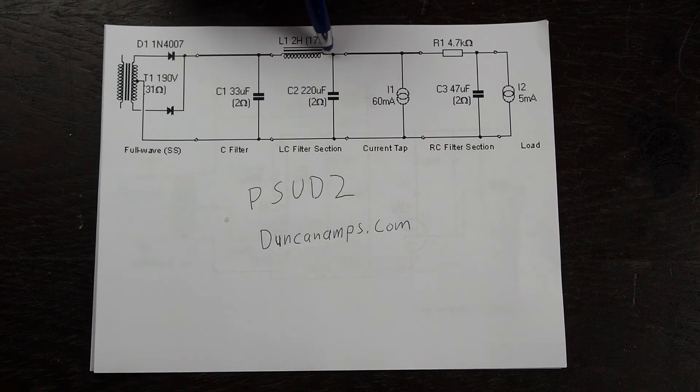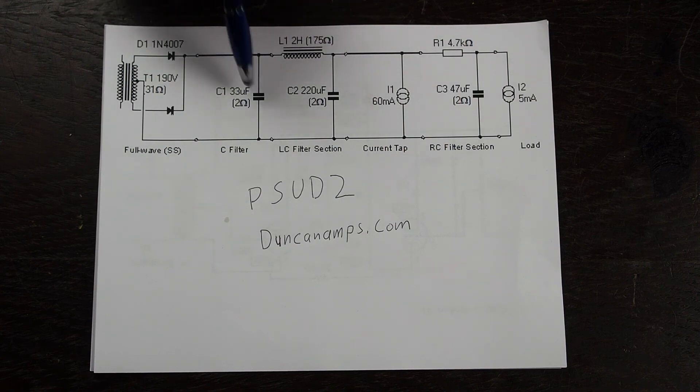The next part is a larger 220 microfarad capacitor that acts as a filter and also acts as a storage capacitor for when the amplifier pulls a strong current. It will pull it from this capacitor because this resistance in this choke will make it easier to pull it from the capacitor instead of this one here that the AC is noisier.